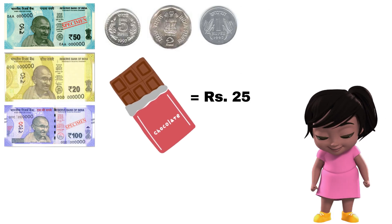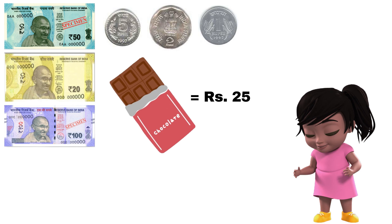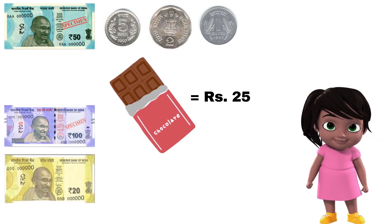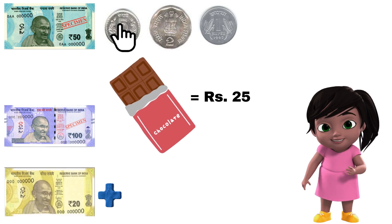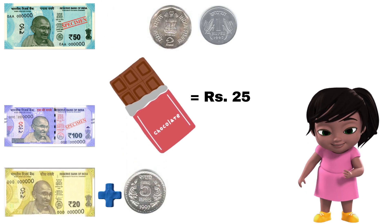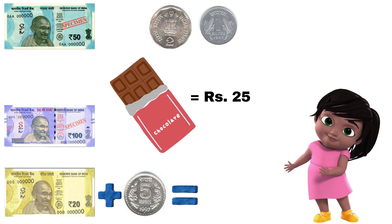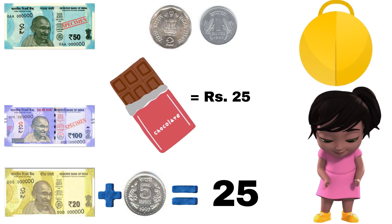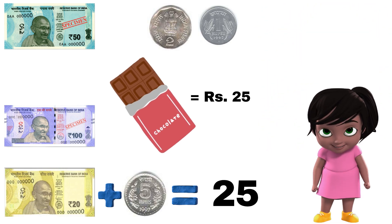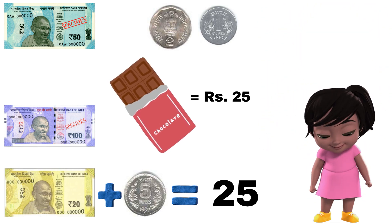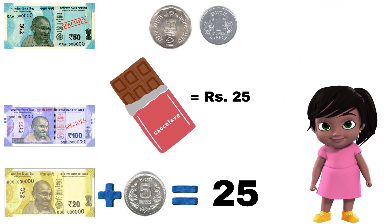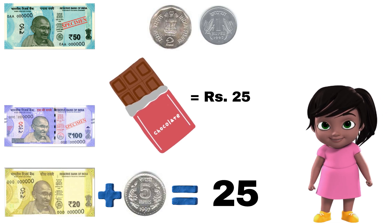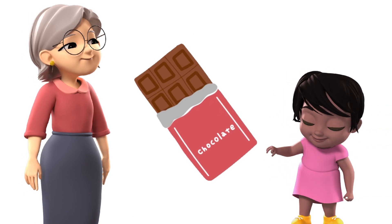Hmm, I know that. I will take this 20 rupees and add this 5 rupee coin. 20 plus 5 makes 25. Well done, that's the correct answer! You can make the payment of rupees 25 by giving the 20 rupee note and the 5 rupee coin. So now this chocolate is yours.